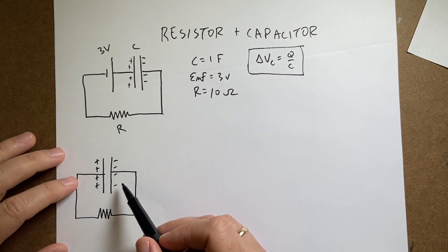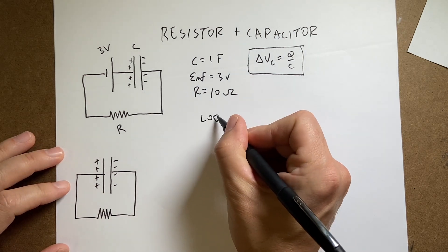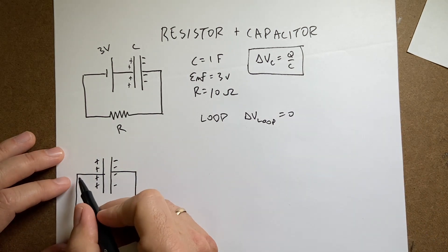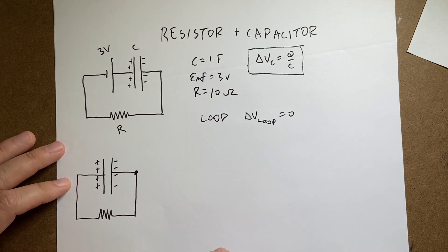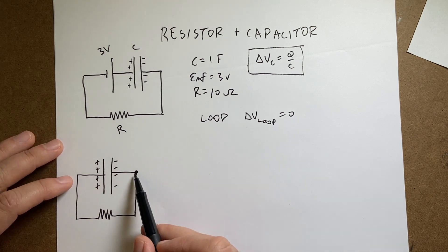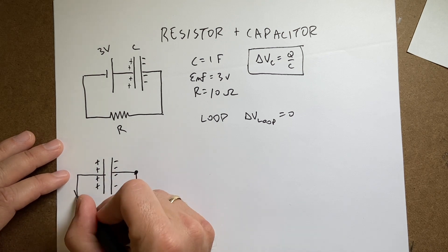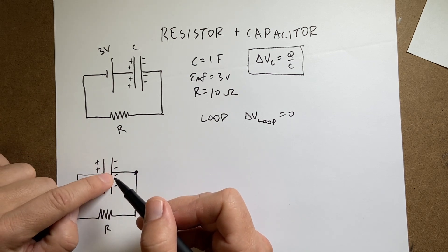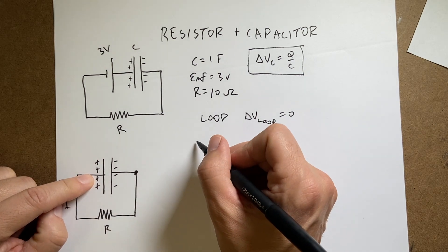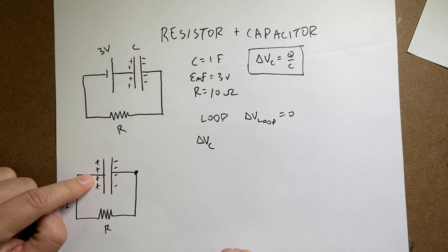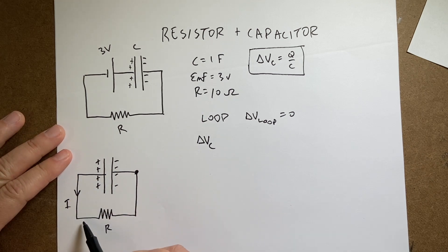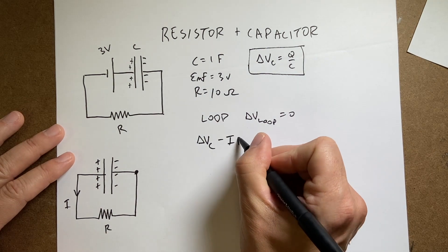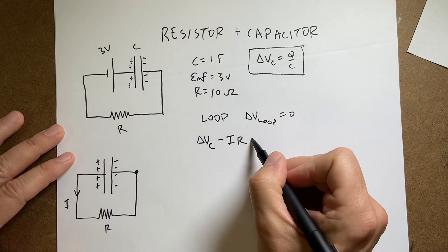So let's start with the discharging situation and use the loop rule, which says that ΔV around any loop equals zero. Going around the loop, I get a positive change in potential across the capacitor: ΔV_C. Then coming through the resistor in the same direction as current, I get a negative IR change in potential from Ohm's law. So ΔV_C minus IR equals zero.